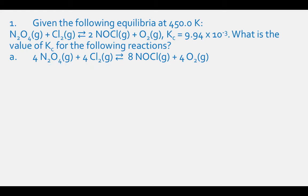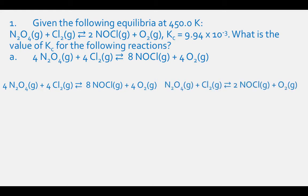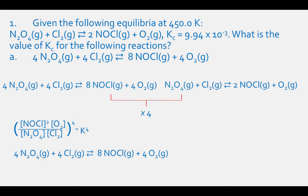To complete part A, compare the reaction equations and you will see that part A is the same as the original reaction multiplied by 4. According to our rules, raise the K value to the fourth power. Therefore, Kc for 4 N2O4 (gas) plus 4 Cl2 (gas) in equilibrium with 8 NOCl (gas) plus 4 O2 (gas) equals (9.94 × 10⁻³)⁴, which equals 9.76 × 10⁻⁹.